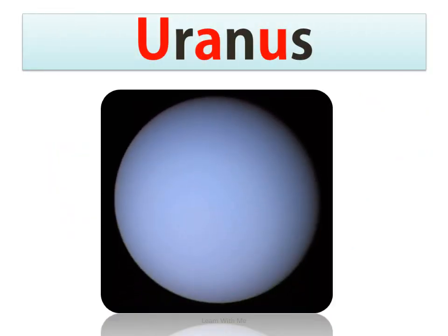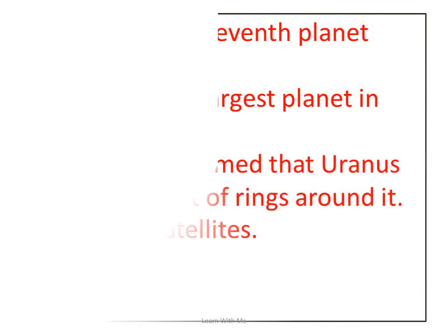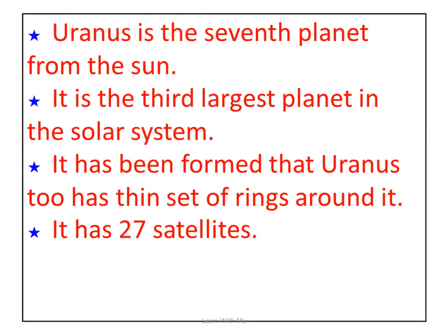Now we discuss about Uranus. Uranus is the seventh planet from the Sun and the third largest planet in the solar system. Uranus also has a thin set of rings around it. It has 27 satellites.